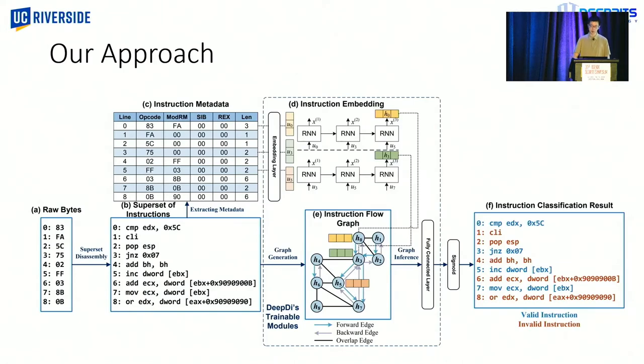And to solve this problem, we present a novel deep learning-based disassembler, DeepDi, which can achieve high accuracy and efficiency at the same time, as well as generalizability and robustness. And here is an overview. The high-level idea is that we first obtain all possible disassembly results. Then we construct a graph using the instructions, and finally we are going to filter out invalid instructions with the help of graph information and deep learning.